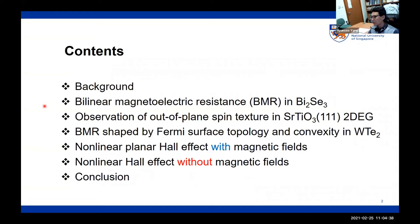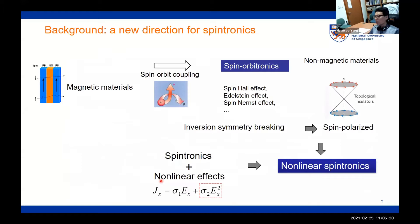This is my content. I'll talk about nonlinear transport in spintronics. One typical example is bilinear magneto-electric resistance, in short BMR. This happens in various topological materials such as a topological insulator bismuth selenide, or even two-dimensional electron gas like a strontium-titanium oxide interface, or it can happen in Weyl semimetals like tungsten ditelluride. Then I will move to Hall geometry, with and without magnetic field, and then I will conclude my talk.